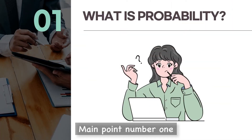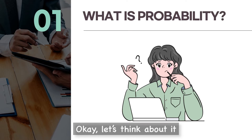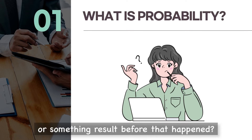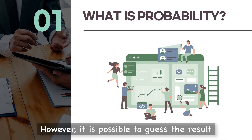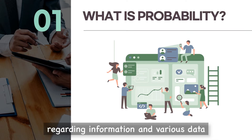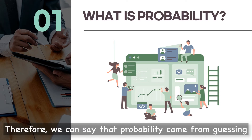Main point number one: what is probability? Let's think about it. Can you predict the future or the result of something before it happens? Absolutely no — it is impossible to know perfectly. However, it is possible to guess the result regarding the information and various data. Therefore, we can say that probability came from guessing.